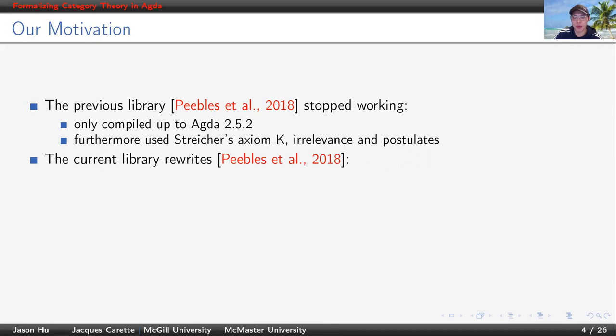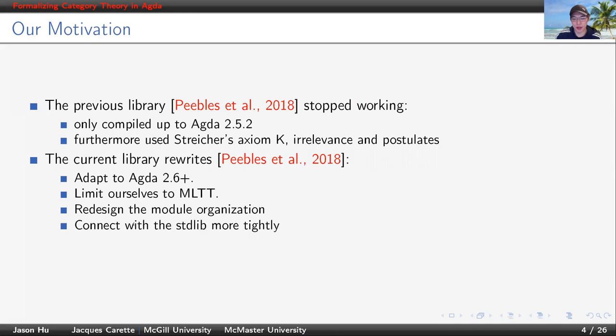In our library, we want to improve the previous library overall by adapting it to the latest Agda 2.6 or up, limiting ourselves to Martin-Löf type theory, reworking the module layout such that it's more user-friendly, connecting it with the standard library more tightly. We also want to provide some properties instead of just a bunch of definitions.